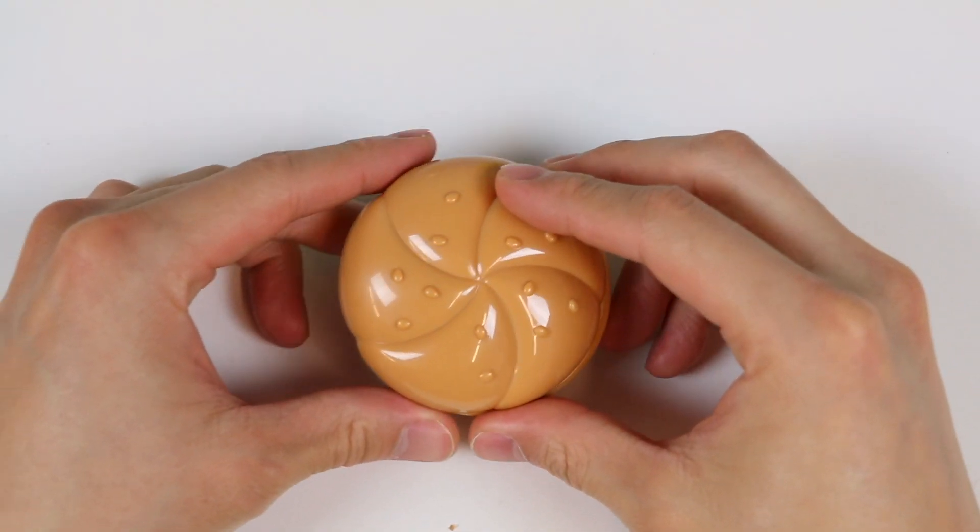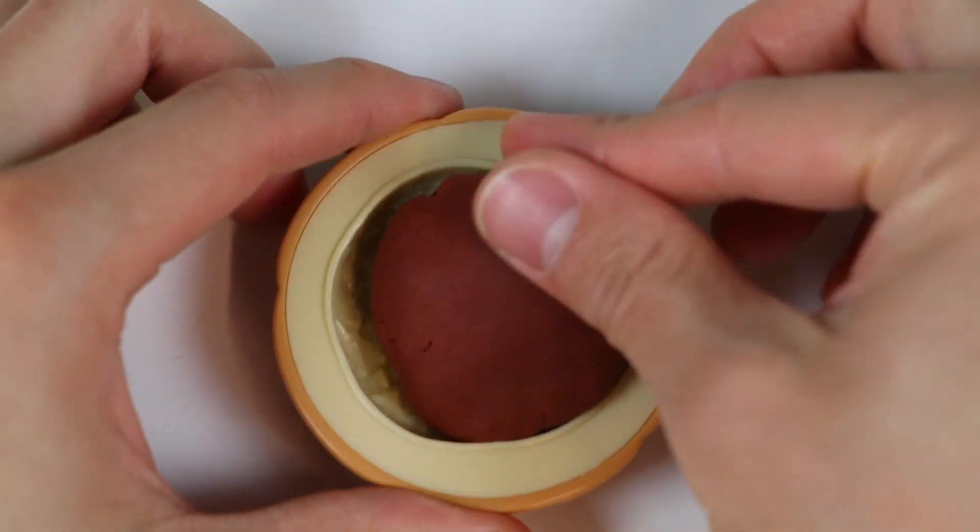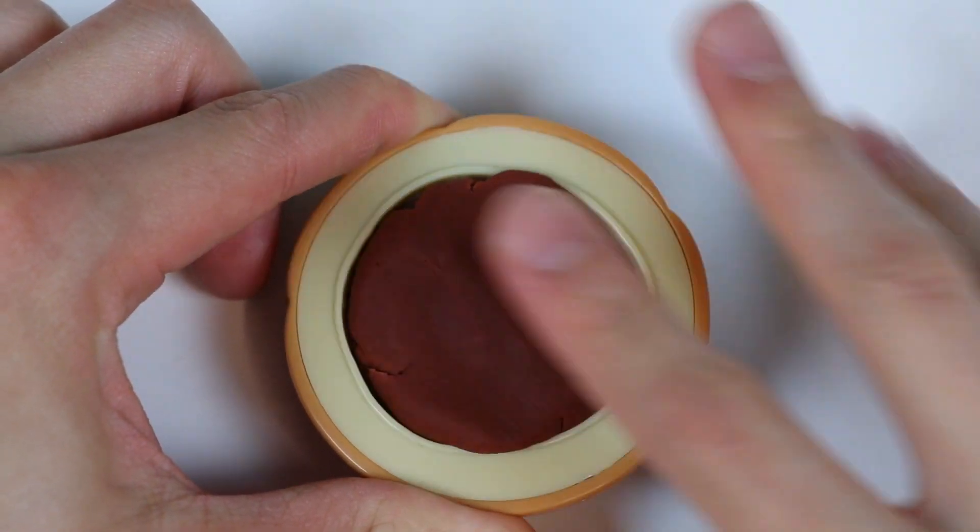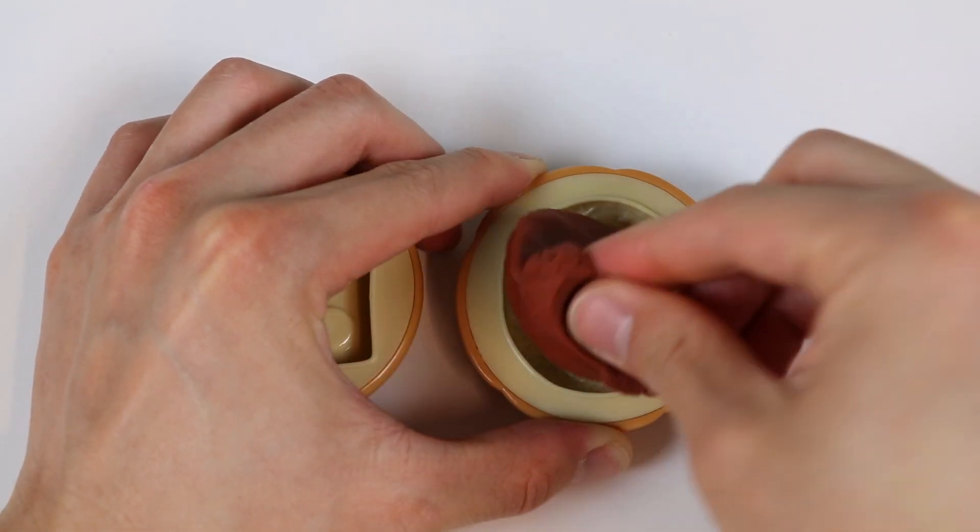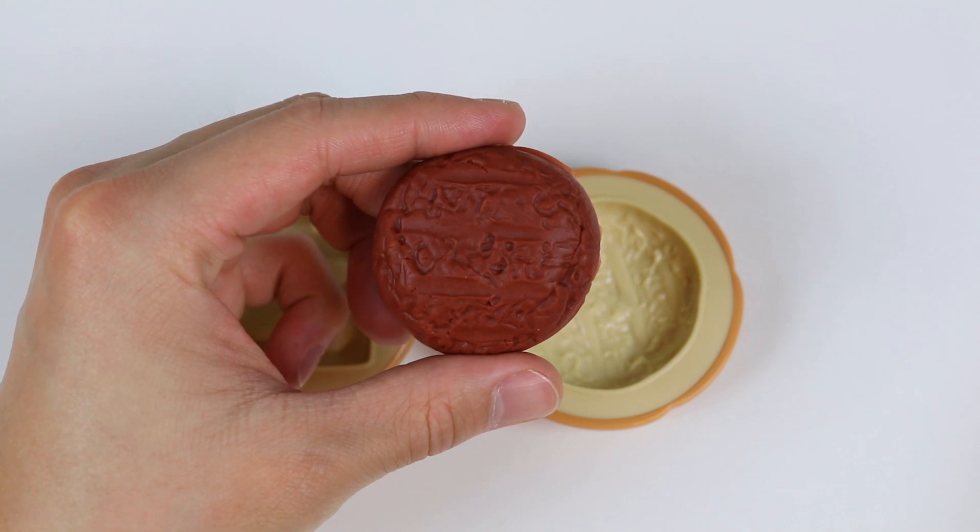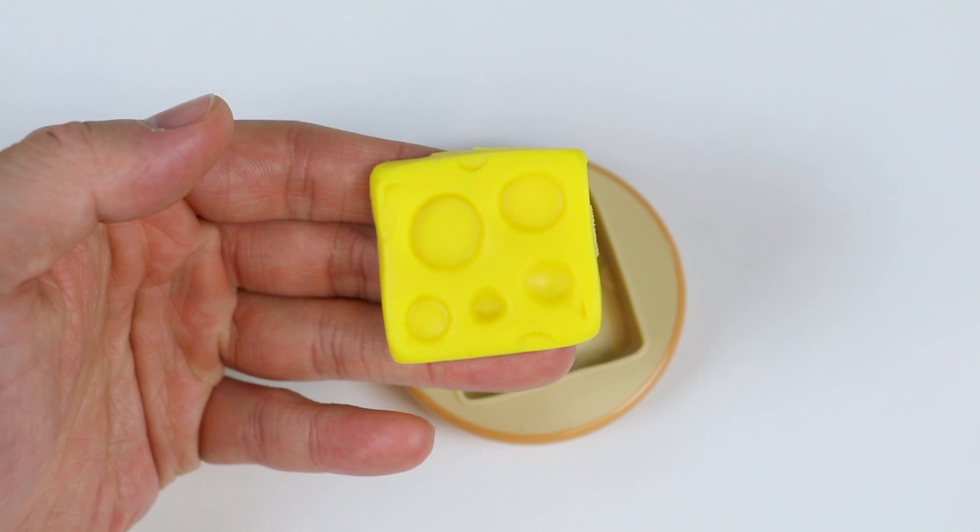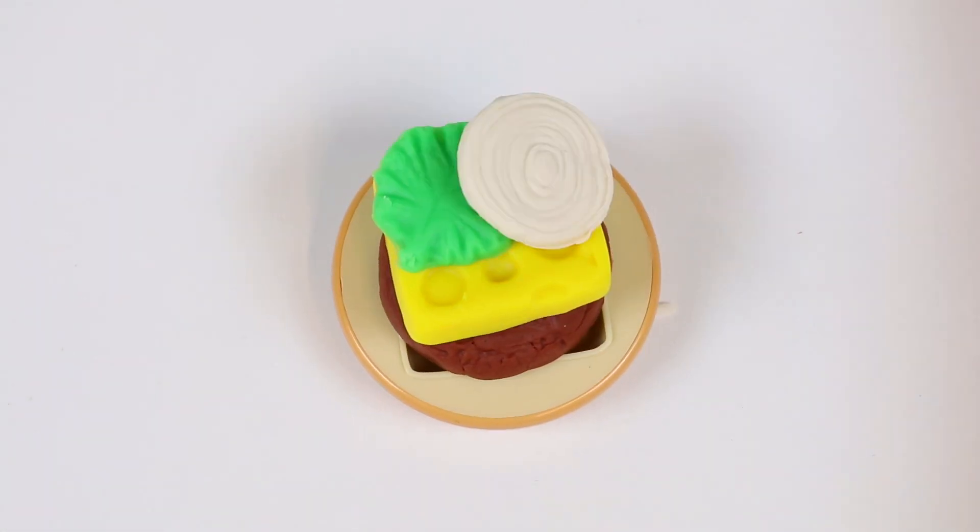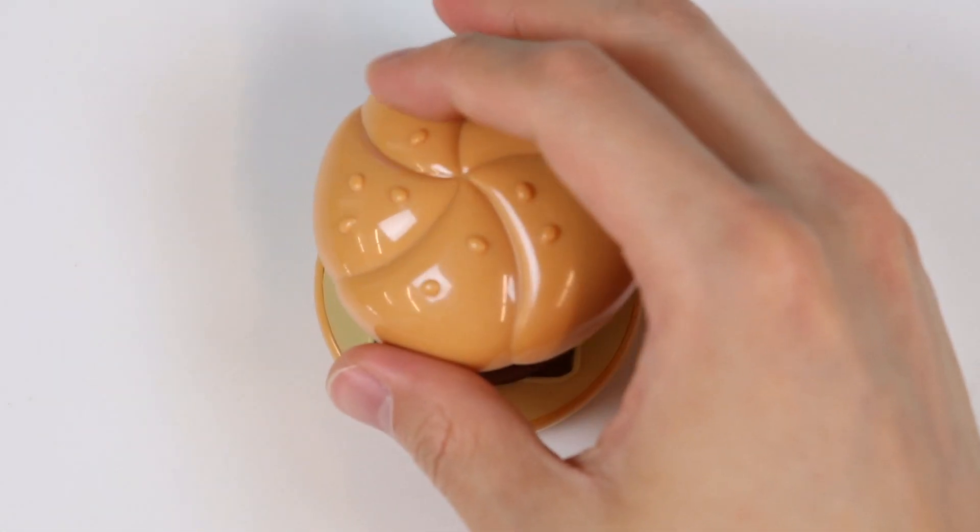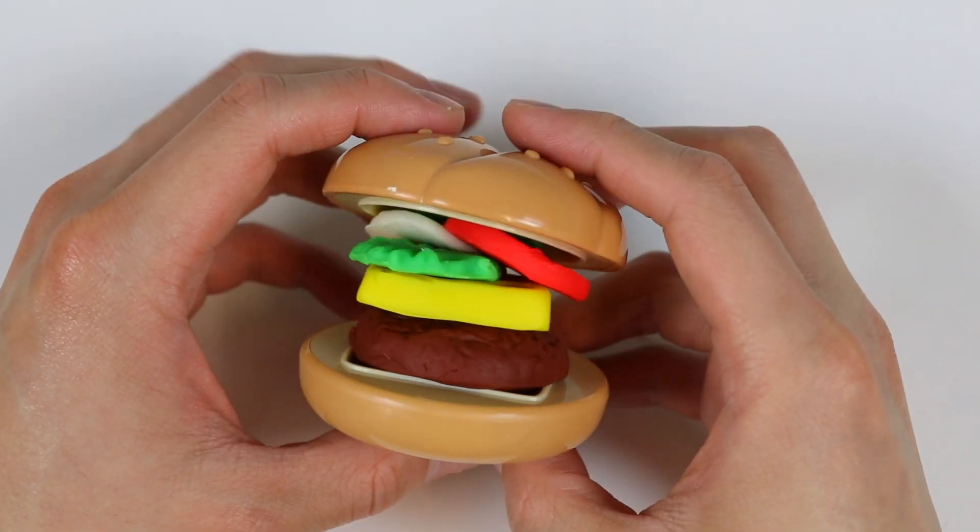Now let's move on to lunch. How about a cheeseburger? Use the brown play-doh to make the patty. A nice juicy patty. Now we need the cheese. Excellent! So we have the patty, cheese, tomato, pickle, lettuce, and onion. And when we put all of those ingredients in between two buns, we make a juicy cheeseburger. Spongebob would be proud of us.